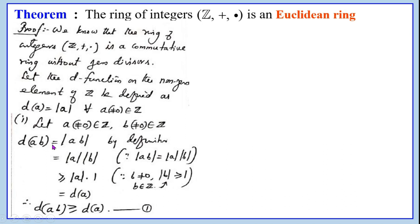Then D(AB) equals the modulus of AB by the definition of the D function. We know that |AB| always equals |A| times |B|. Since B is not equal to 0, |B| is greater than or equal to 1. Therefore |A| times |B| is greater than or equal to |A| times 1, which equals |A|, which is D(A). Thus D(AB) is greater than or equal to D(A). Let us call this condition 1. Thus the first condition of the Euclidean ring is satisfied.